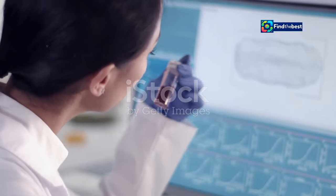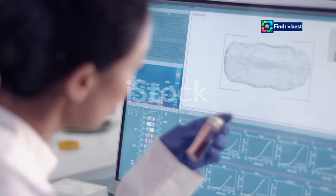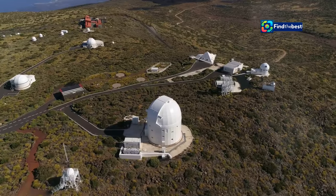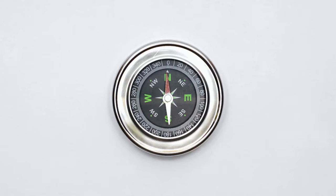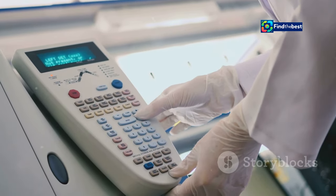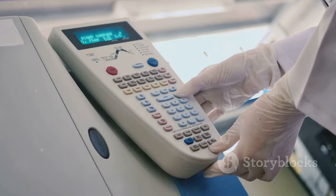Tracking the movement of something invisible might seem like a daunting task, but scientists have developed sophisticated tools and techniques to monitor the ever-changing magnetic north pole. One of the primary tools is a global network of magnetic observatories. These observatories are strategically located around the world and equipped with highly sensitive instruments called magnetometers. Magnetometers measure the strength and direction of the Earth's magnetic field, providing valuable data on its fluctuations and the movement of the poles.